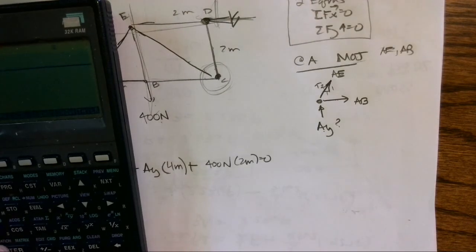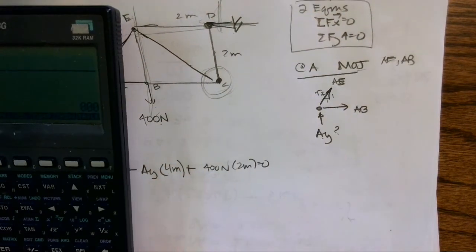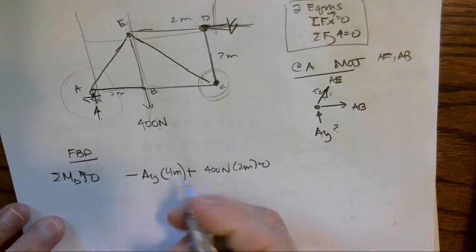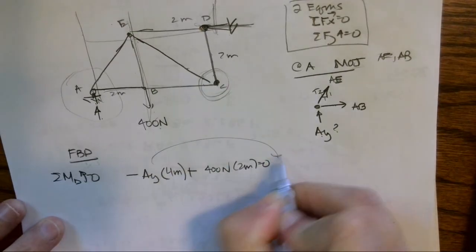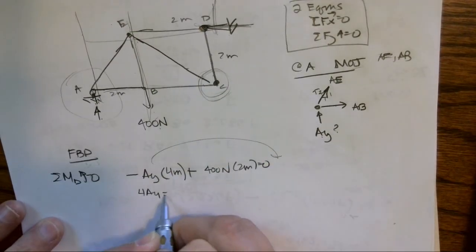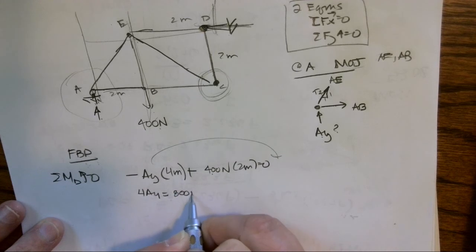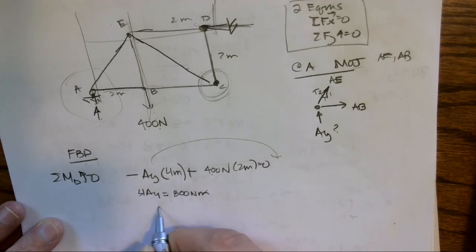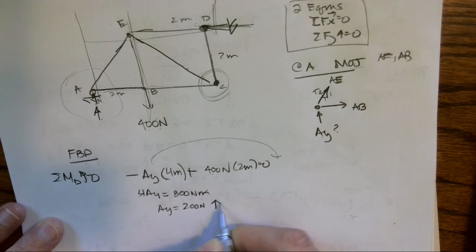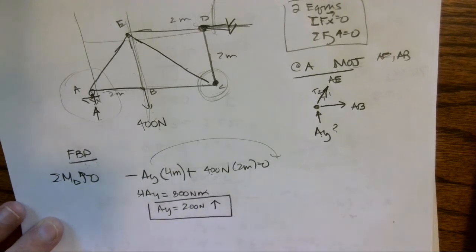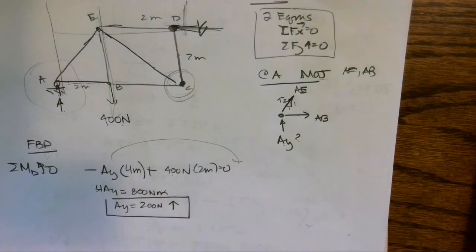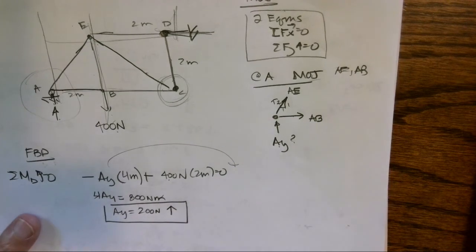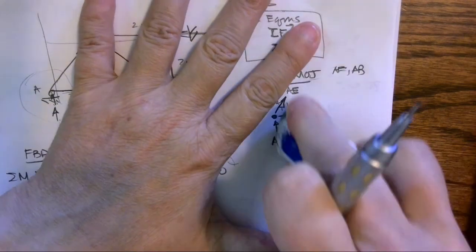So I can pull this out: 400 times two. So I'm going to isolate this—Ay equals 800 Newton-meters. I'm going to take out my four meters from both sides, so I have Ay equals 200 Newtons, and again it's going up. I don't use positive or negative—I show directions.